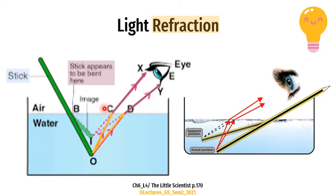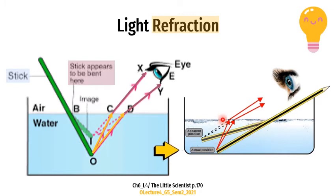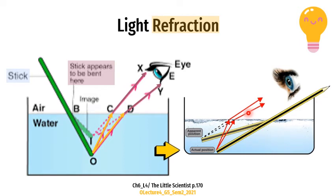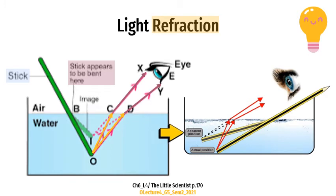What about the pencil? The pencil reflects light to our eyes. Here is its actual position. When the light rays leave the water to the air, they bend and are broken. This is why the pencil appears to be in a different position and appears to be broken.